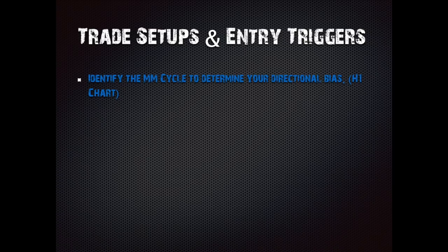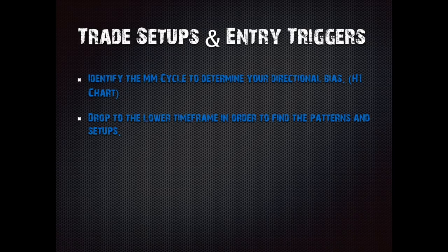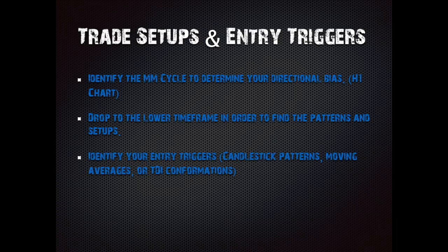If you don't know where you are in the cycle, skip that pair and trade a different one — there are 50 other pairs you can trade. Once you've identified your directional bias and know what part of the cycle you're in, drop down to the 15-minute timeframe to find patterns and setups. Identify your entry triggers based on candlestick patterns, moving averages, or TDI confirmations. The most important one is the pattern.